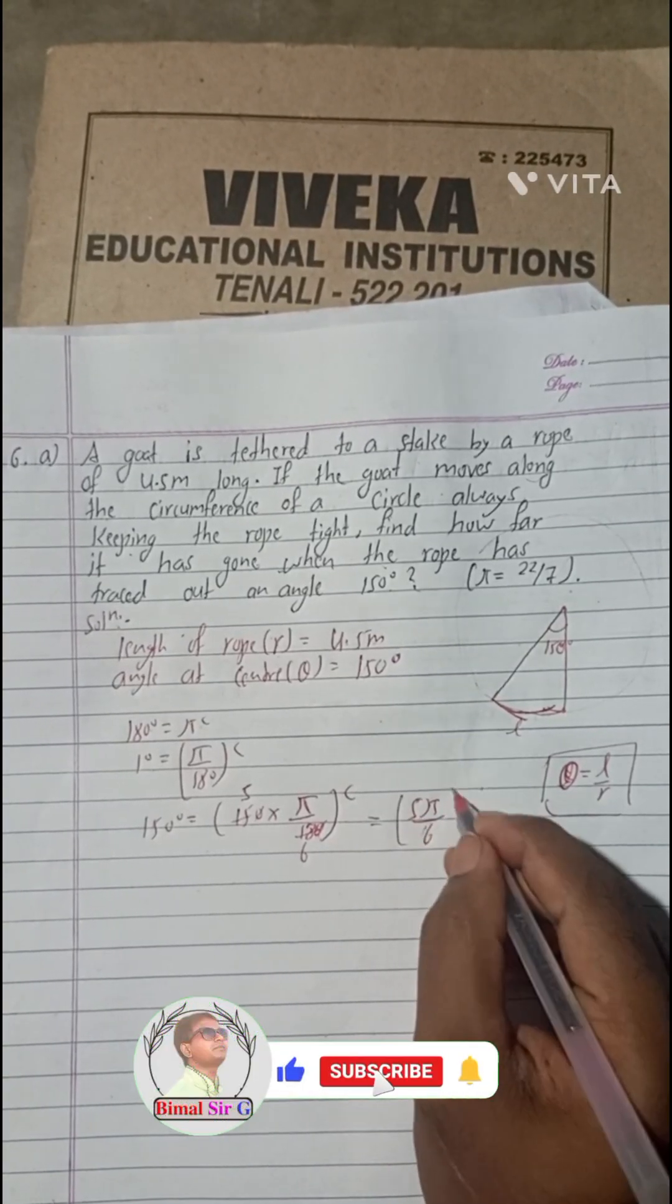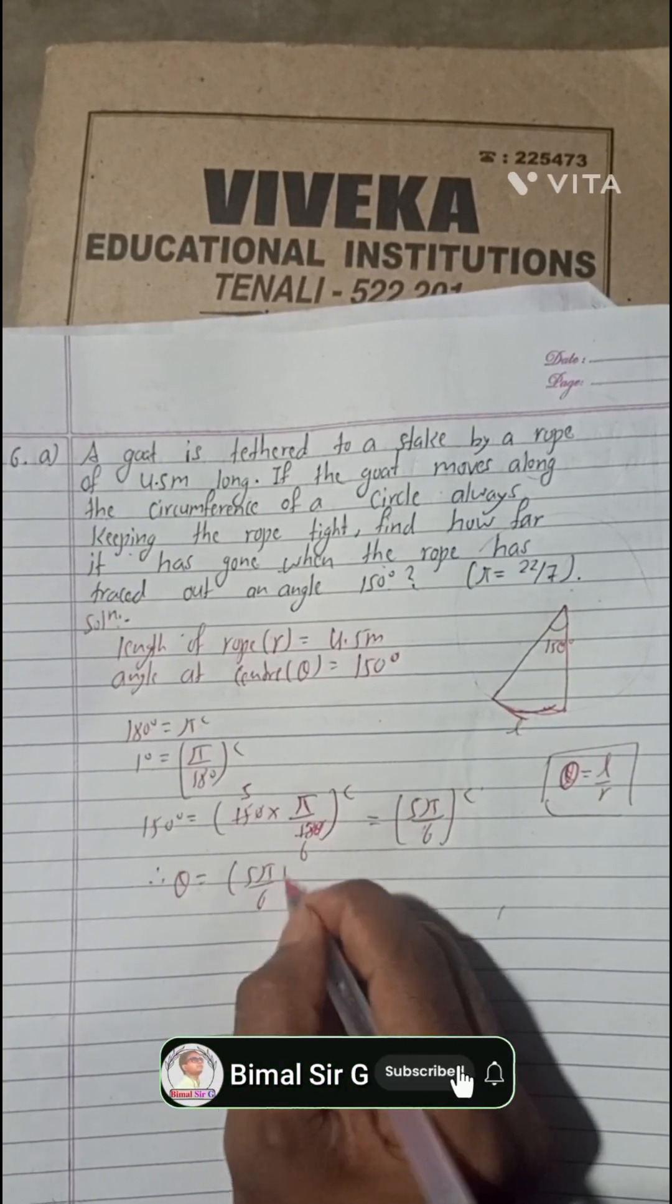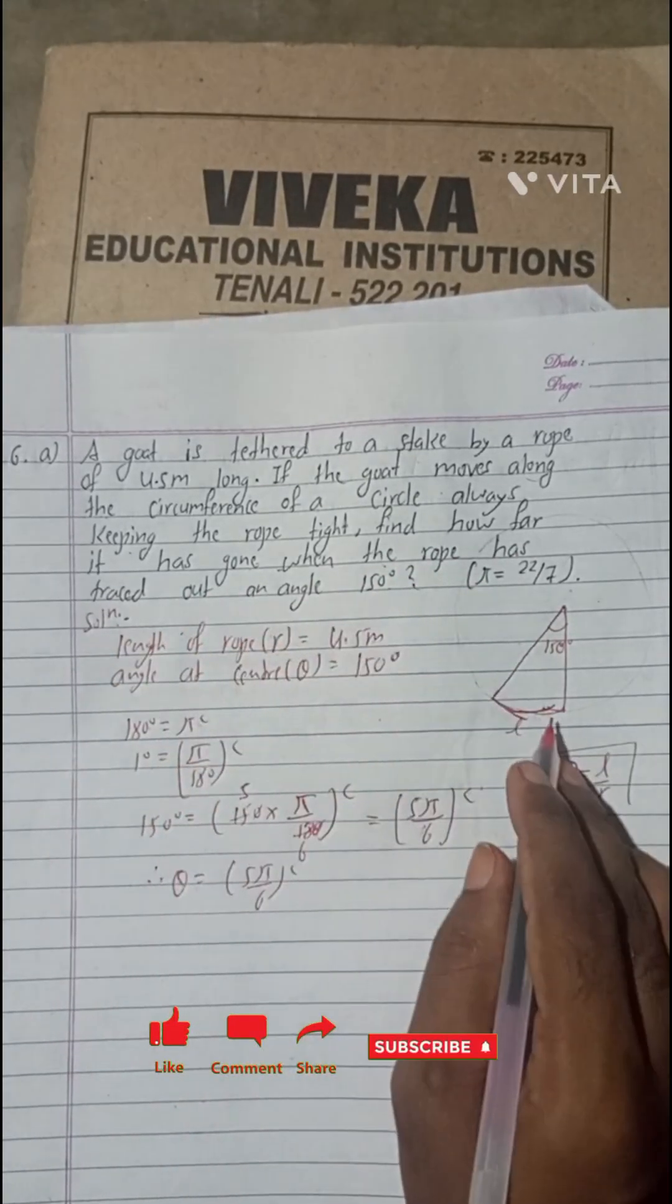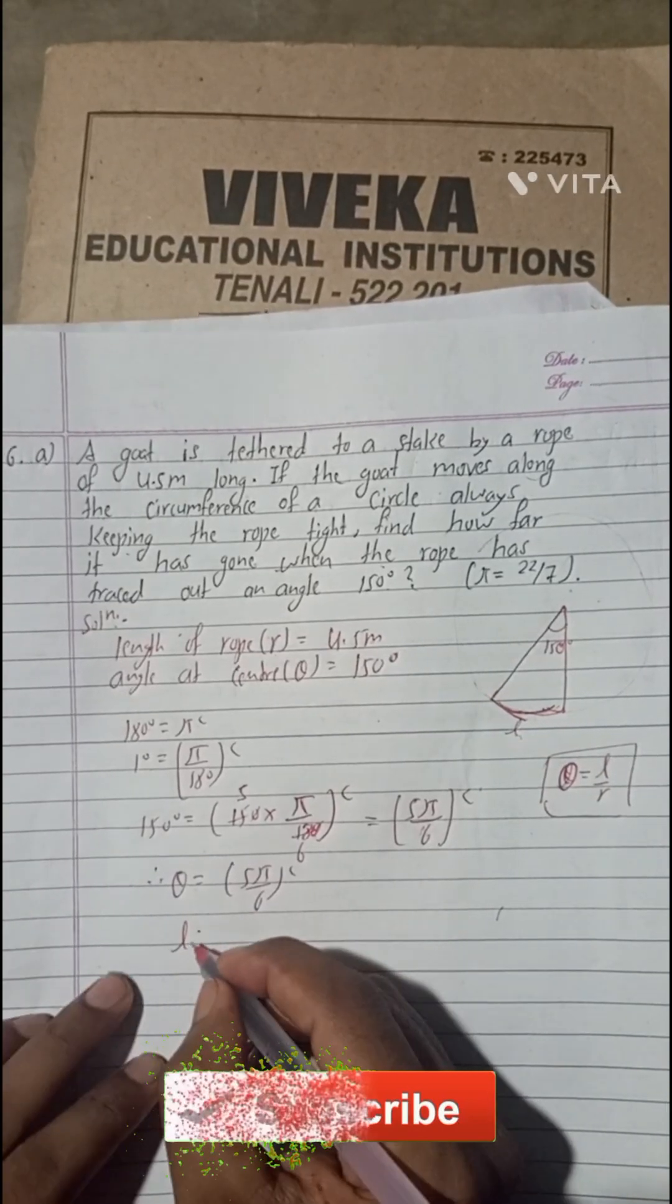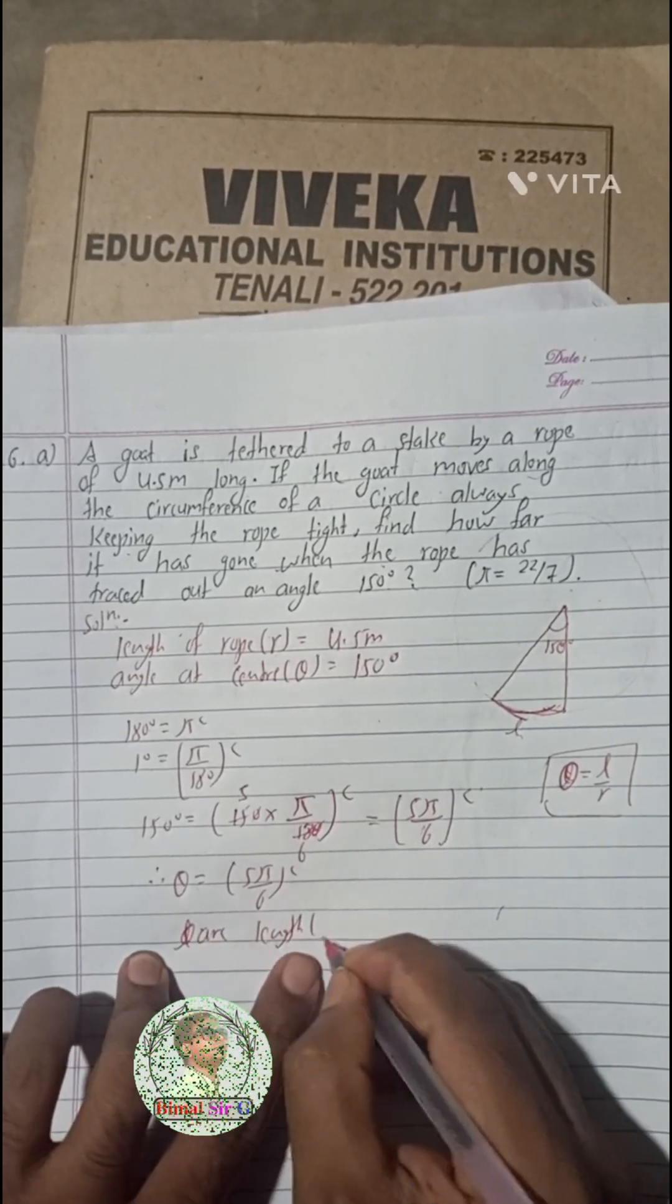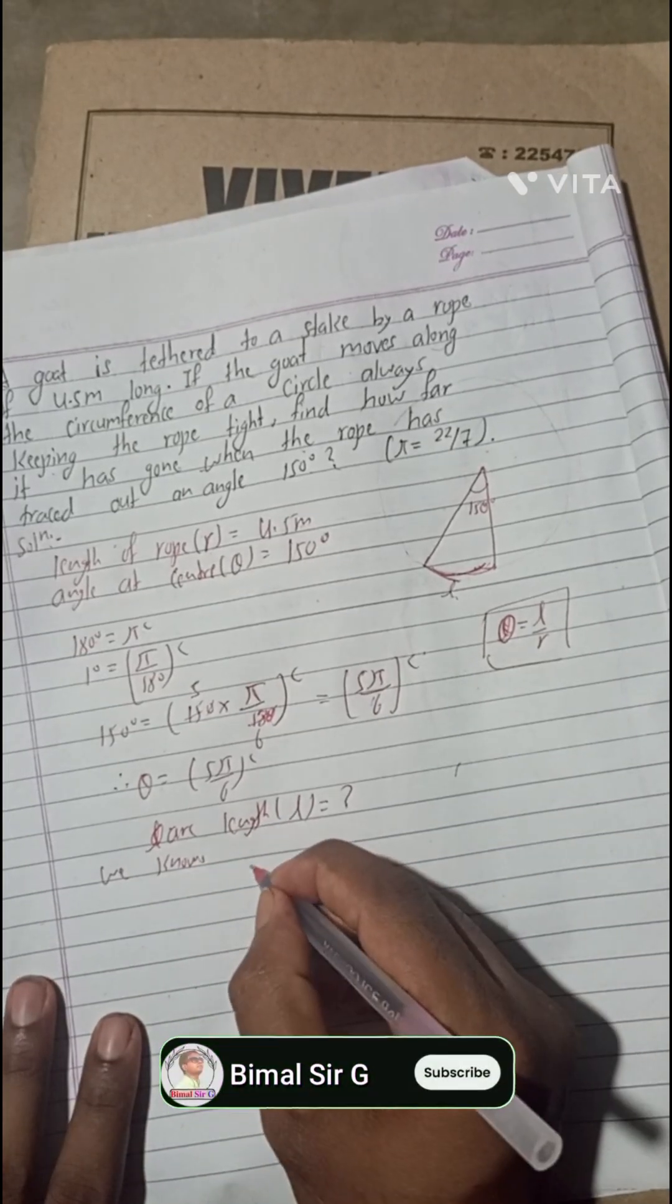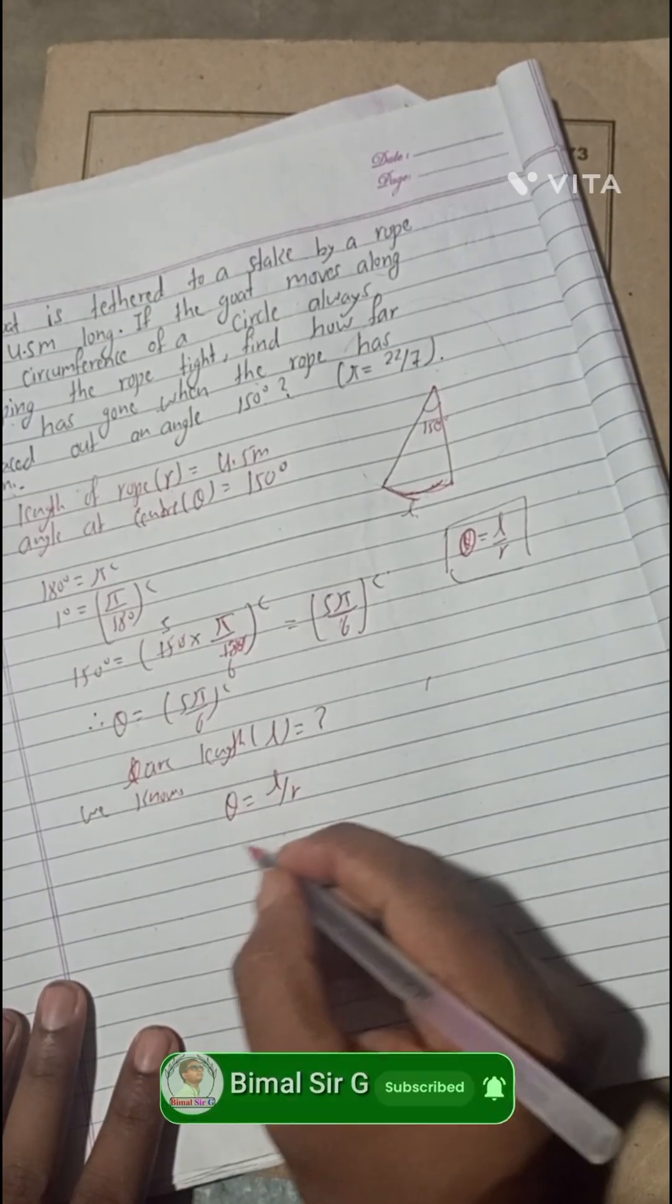Therefore, theta is equal to 5 pi by 6 radian. Now, L is equal to what? We can see the question: find how far it has gone. So how far gone means this distance, that means arc length L is equal to what? We know arc length.